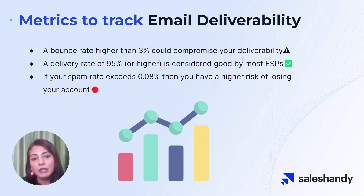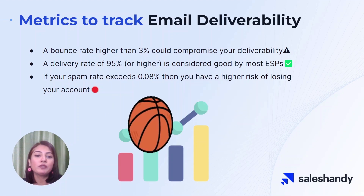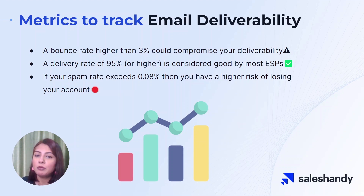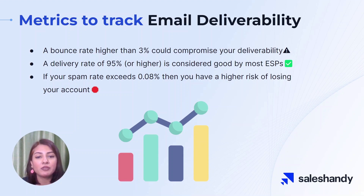Now we will talk about the key metrics you should track to ensure good email deliverability. First, let's talk about bounce rates. This is the percentage of emails that are not delivered to your recipient's inbox. A high bounce rate can indicate a number of things, such as invalid or outdated email addresses on your list or problems with your sender's reputation. A bounce rate higher than 3% is generally considered too high and can compromise your deliverability.